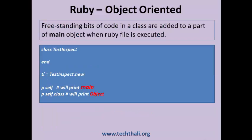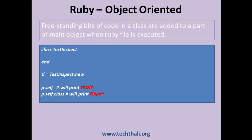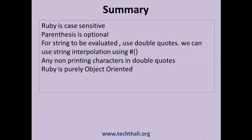If a class file contains code which is not part of the class, it will be added as part of the main object. The following example prints the object name as 'main' when printed from outside the class.